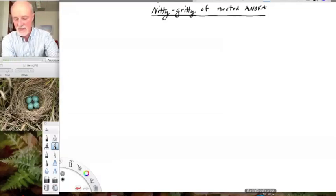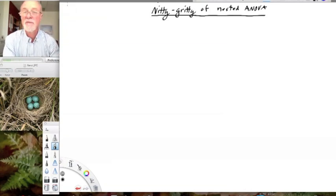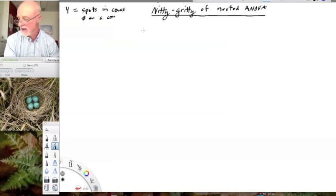Good morning. Today we're going to go into the nitty-gritty of nested ANOVA, and I want to use a fun example where we are actually studying the effect of inheritance on the inheritance of spots in cows. Our y-value is the number of spots on a cow, and we're going to investigate the influence of the mother and the father on that using a very simple, oversimplified data set.